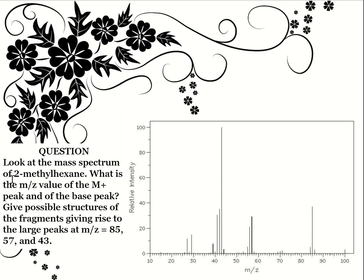Here is a question: look at the spectrum of 2-methylhexane and answer: what is the mass-to-charge value of the M+ peak and of the base peak? Give possible structures of the fragments giving rise to the peaks at m/z 85, 57, and 43. First, draw the structure to get an idea of the possible daughter or fragment ions. Pause the video and try the question before moving on to the answer.